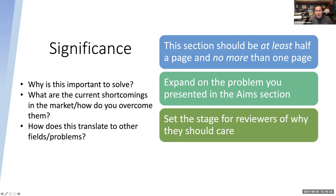The significance section is an expansion of the discussion in that first paragraph of specific aims. Why is this problem important to solve? What are the current shortcomings in the market? How does this translate to other fields or problems in other industries? Showing reviewers the dual use of the technology, or saying 'if we can solve this problem in this market, we see future expansion in this market that will help even more patients,' is really important. Generally, this section should be at least half a page but no more than one page — we only have six pages here and significance is important, but it's not the most important section.